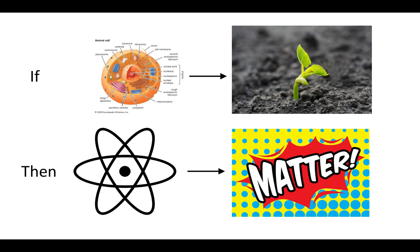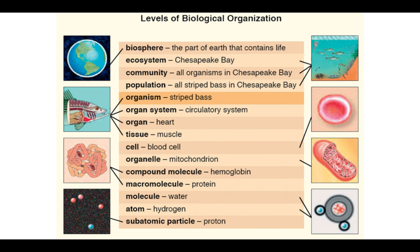You can figure out the different types of atoms using what's called the periodic table. There are different elements like gold, oxygen, or nitrogen. All oxygen atoms are the same, and they're all different from carbon atoms.